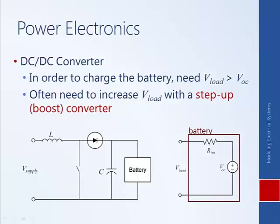As a very basic introduction to how a boost converter works, here's a picture. The idea is we have some supply voltage, and this boost converter in between is going to be used to increase the supply voltage to a level such that the voltage across the battery is on average sufficiently high that we can actually charge the battery.